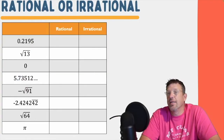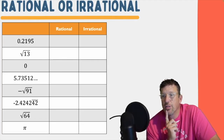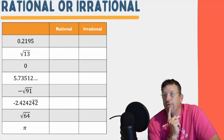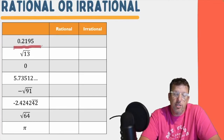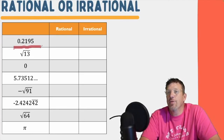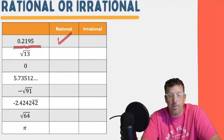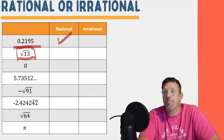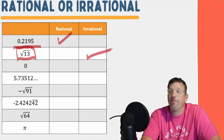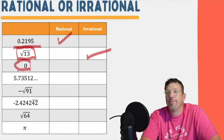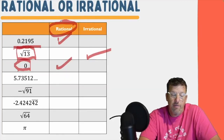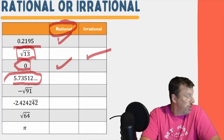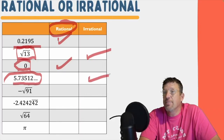All right, so now let's look at these and categorize them. Now that you know all that, pause the video if you need to and fill this out — put a check mark where you think each one of these goes. Rational numbers: 0.2195 is a decimal that stops — that's a terminating decimal, so it's rational. The square root of 13 — 13 is not a perfect square, so the answer is going to be a decimal that goes on forever — that's irrational. Zero is a whole number — that's rational. 5.73512... — that's a decimal that goes on forever with no pattern — that's irrational.